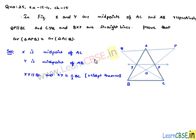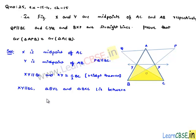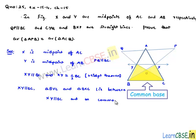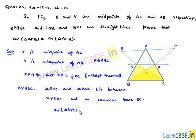It is also given that PQ is parallel to BC. Now, triangles BYC and BXC lie between parallel lines XY and BC, which is parallel to XY, and on common base BC. We know that two triangles lying between two parallel lines with a common base will have equal area. Therefore, area of triangle BYC is equal to area of triangle BXC.